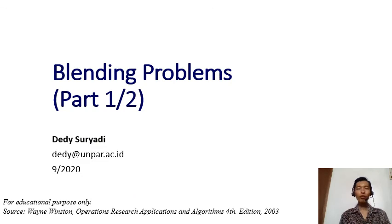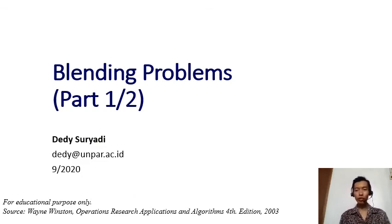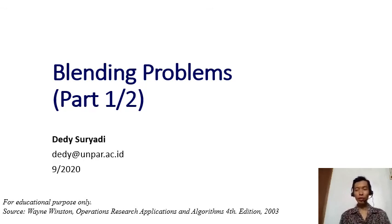We have now formulated the decision variables and the objective function for this problem. In the second part of the video we are going to formulate all the constraints and assign restrictions to complete the formulation of this problem. See you in the second part of the video.